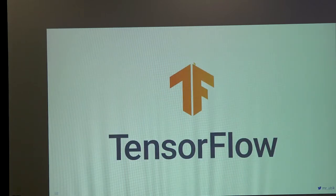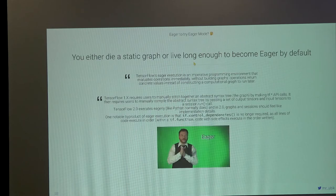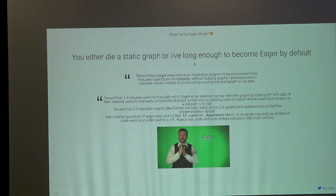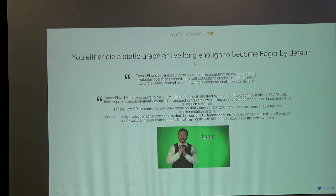So here's the new TensorFlow. As you see the logo has become slicker — much less sharp, more sleek and modern. And the same thing happened to the API. You either die a static graph or live long enough to become eager by default. So static graphs are gone, but not really — they've actually gone into hiding. By default now the code you write in TensorFlow is eager mode. TensorFlow eager execution is an imperative programming environment that evaluates operations immediately — without building a graph, operations return concrete values instead of constructing a computational graph to run later. So gone is the need for the scope and the graph and then running the graph in a session. Now you write Python, you execute stuff, and you actually have values.